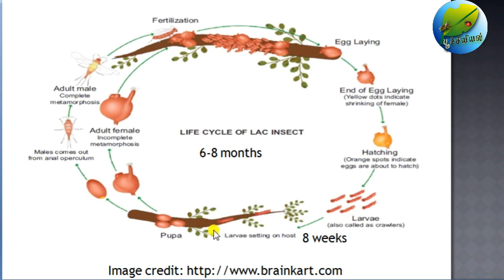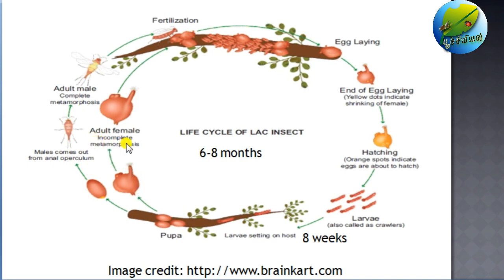The first instar larvae look for settling areas on the host. They move to the right part and when they find it, they stick there and never move again, becoming immobile. After going through the first molt, they lose all their parts. In the case of males, they turn into pupae, and the pupae turn into adults — either the wingless or winged form — following complete metamorphosis. In the case of females, they do not follow complete metamorphosis; mostly they undergo incomplete metamorphosis only.